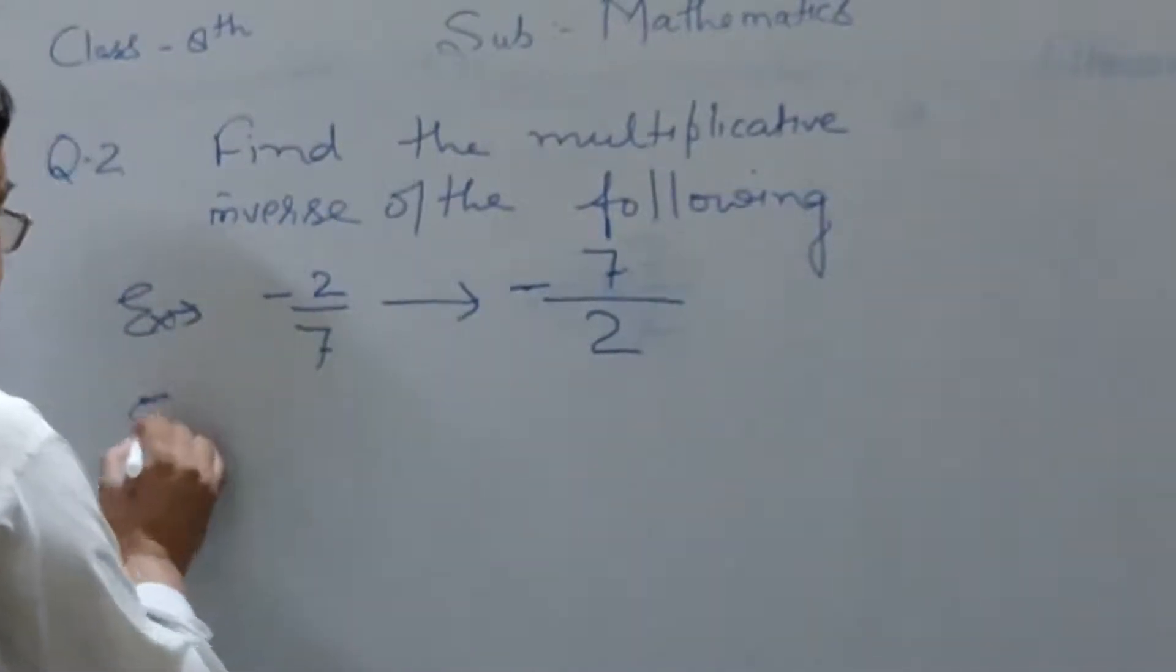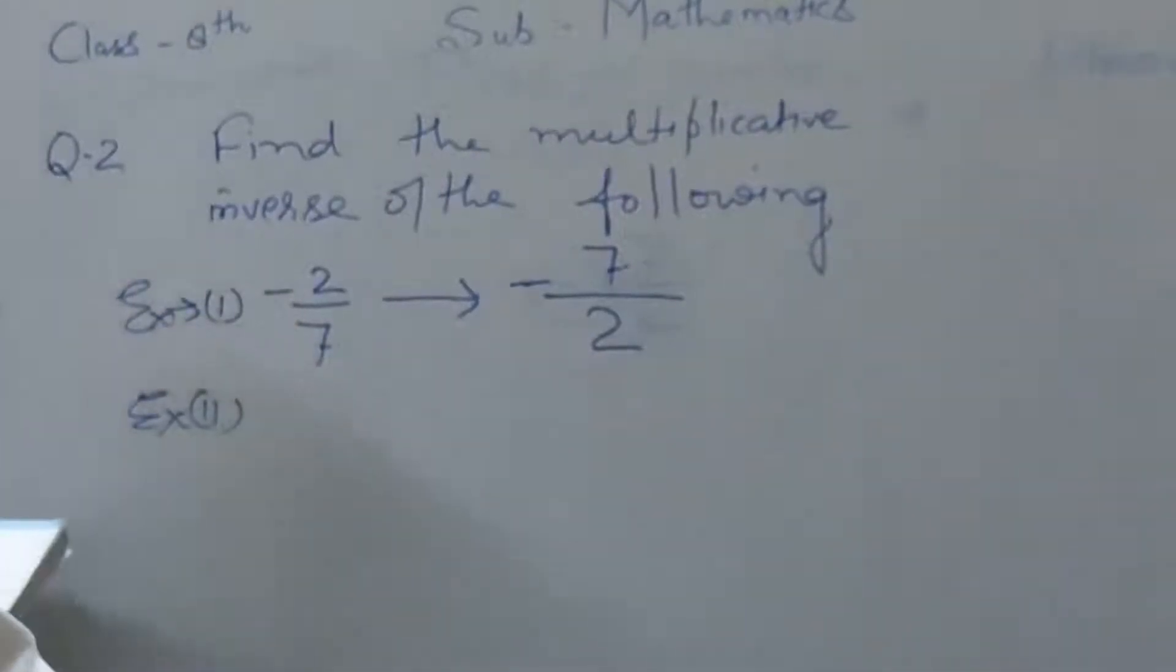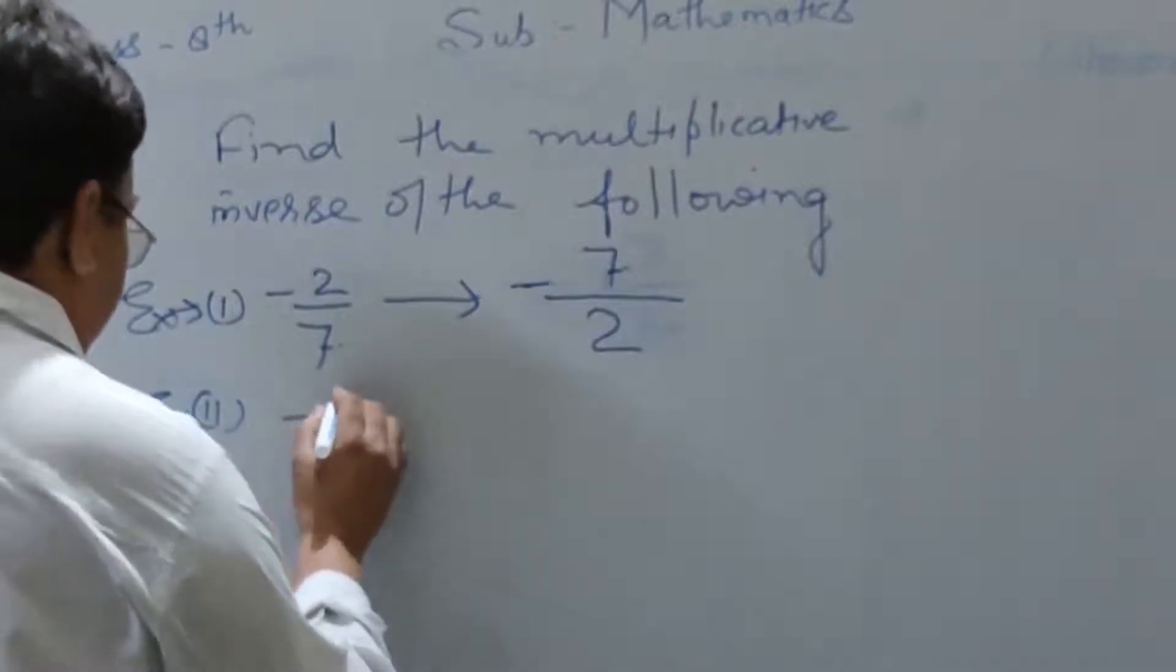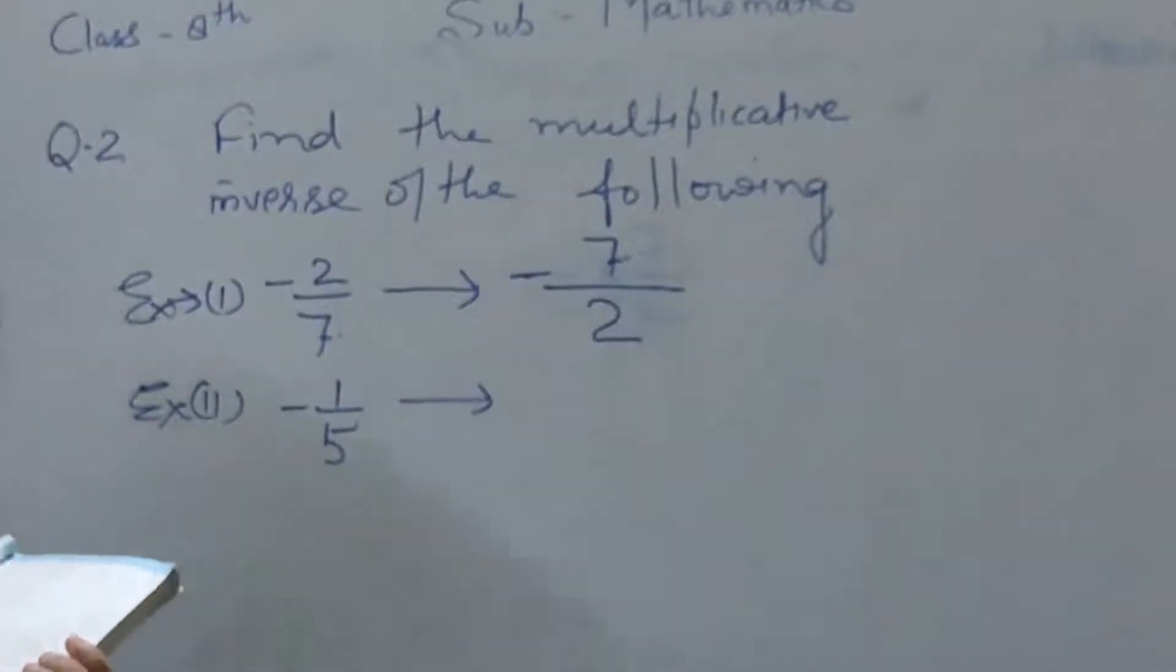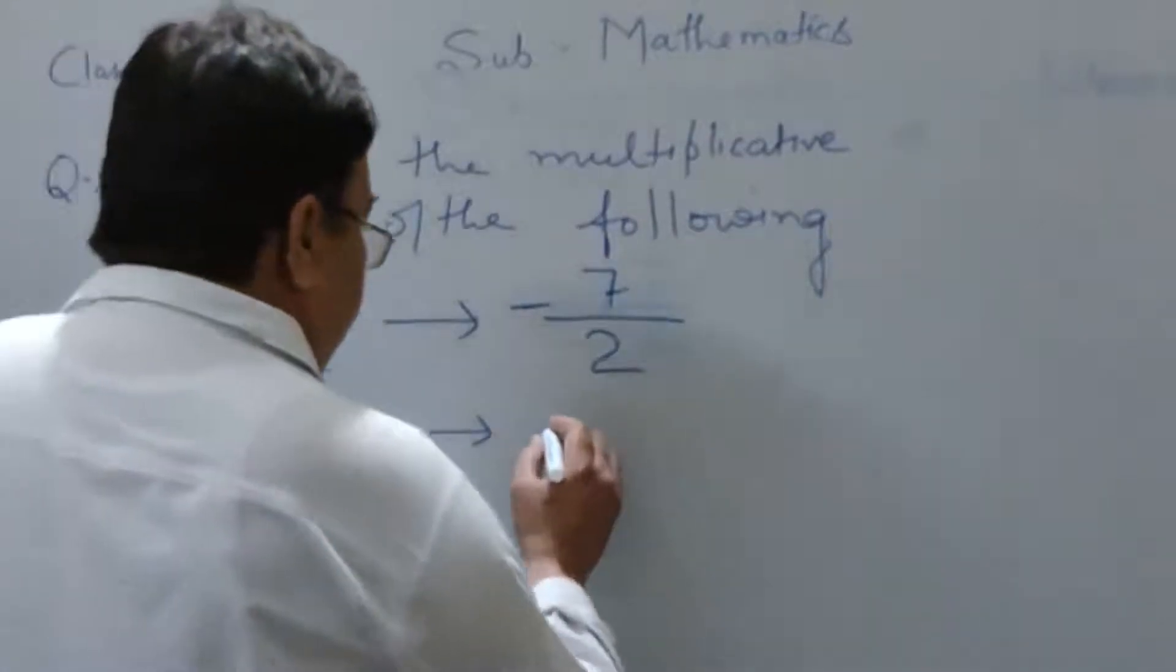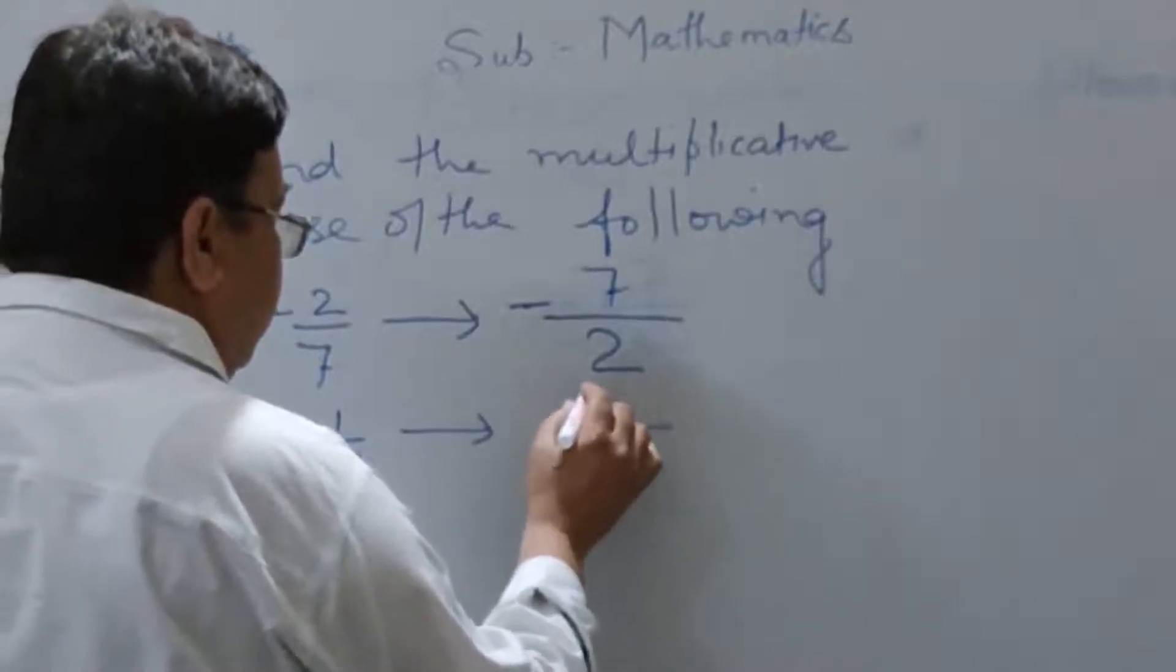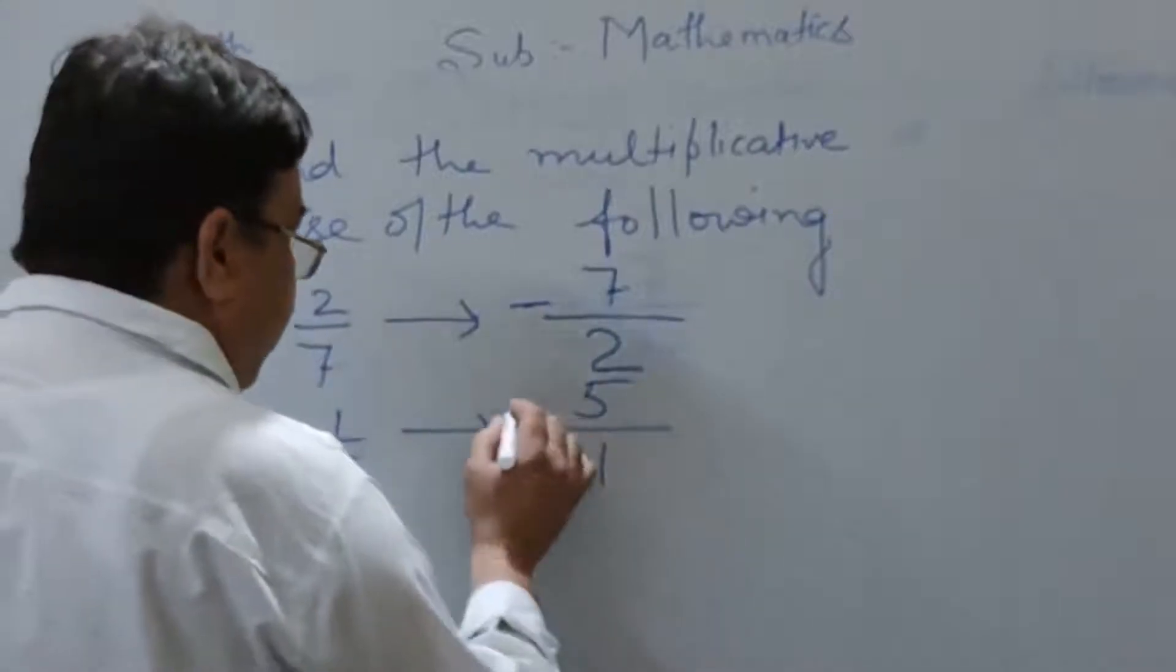And second example, this is the first example. In this example, 5 becomes numerator and 1, numerator 1 becomes denominator. And put the sign. We will meet in next video.